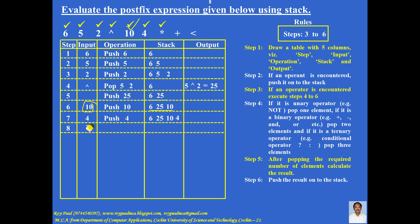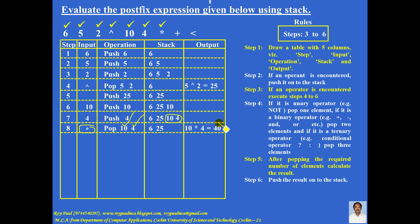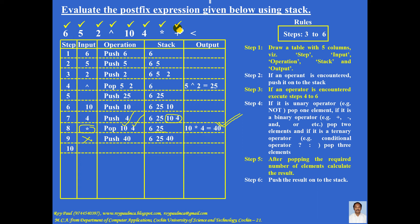Next is the star (multiplication) operator — three things to be done. First, it's a binary operator, so pop two elements; the topmost elements are popped. After popping, your stack contains 6 and 25. Second, calculate the answer: left operand first — 10 times 4 equals 40. Third, push the answer — input is not there because you are pushing the answer. Stack now contains 6, 25, and 40.